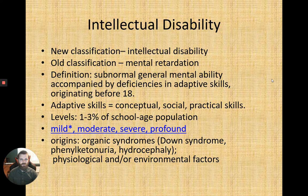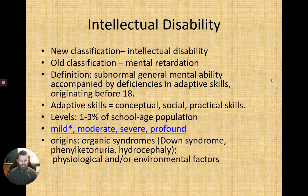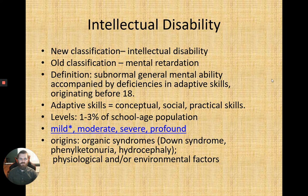Intellectual disability is typically identified through deficiencies with adaptive skills before age 18 — including conceptual thinking, social functioning, and practical skills like self-care, employment, or functioning in expected environments. These deficiencies across conceptual, social, and practical domains can constitute an intellectual disability classification.